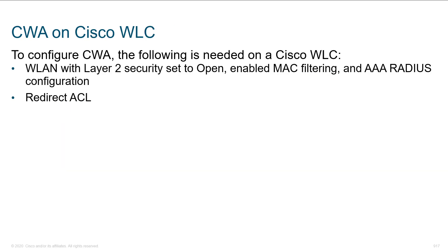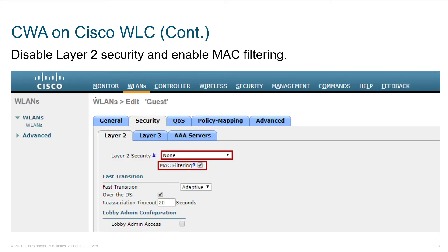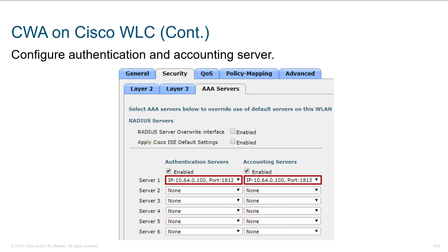Leveraging CWA within a wireless LAN controller involves a couple of steps. We go to the wireless LAN, set layer 2 to open, enable MAC filtering, and tie into AAA RADIUS. We can also set up a redirect ACL — this defines traffic that should be redirected. To enable MAC filtering it's pretty straightforward. Here we see layer 2 security options in a drop-down, and we can limit access based on MAC address. When authenticating against back-end AAA servers, we simply define them with their IP addresses and ports for authentication and accounting services.